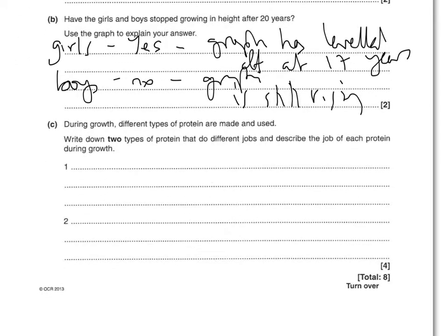During growth, different types of protein are made and used. Write down two types of protein and describe the job of each during growth. This is worth four marks. You could say structural proteins — which build new tissue — for two marks. You could say hormones to control growth or during puberty. You could say carrier molecules such as haemoglobin to transport materials. Or enzymes to control chemical reactions. There are eight possible marks available but you only need any four of those points.